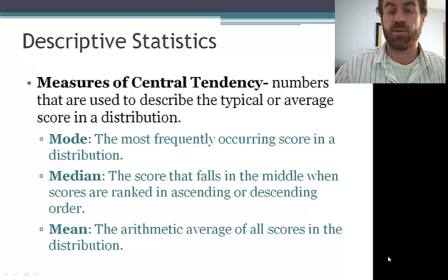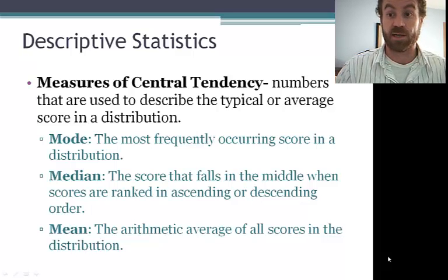So, we have three measures of central tendency in descriptive statistics. Hopefully you're already familiar with these. The mode being the most frequently occurring score, the median being the middle score, and the mean being the arithmetic mean.